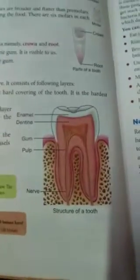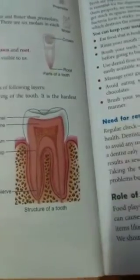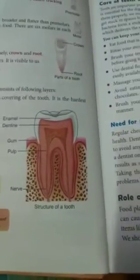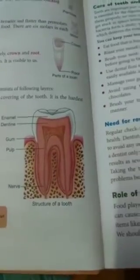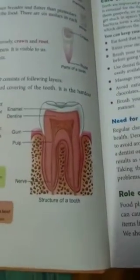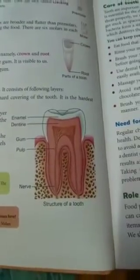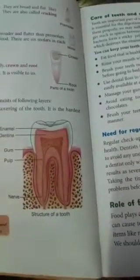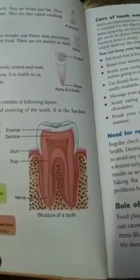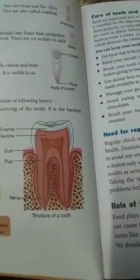Now we come to the structure of a tooth. A tooth is a hard and bony structure. It consists of three layers: enamel, dentine, and pulp. The top part is called enamel. It is a hard covering of the tooth and it is the hardest substance of our body.